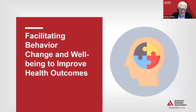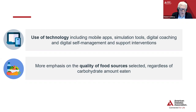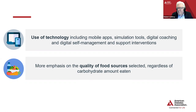The next section that was updated includes facilitating behavior change and well-being to improve health outcomes. There's a recommendation around the use of technology that includes mobile apps, simulation tools, digital coaching, and digital self-management and education and support interventions. In the area of food, there is more of an emphasis on the quality of food sources. Regardless of the carbohydrate intake levels, one needs to consider things like fiber content in carbohydrates and processing, steering towards unprocessed foods.